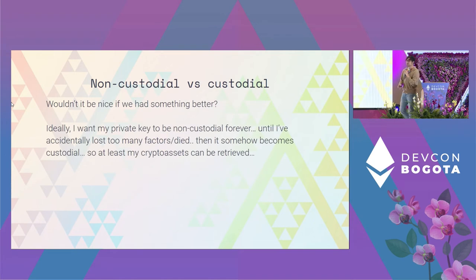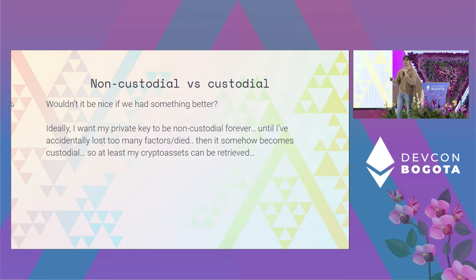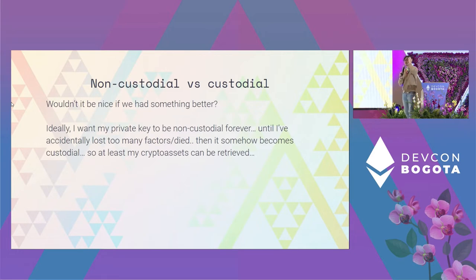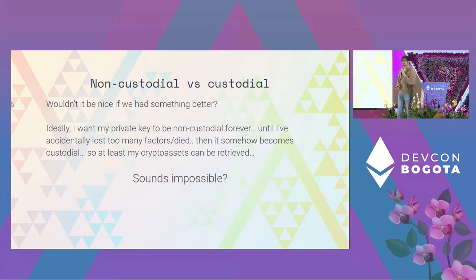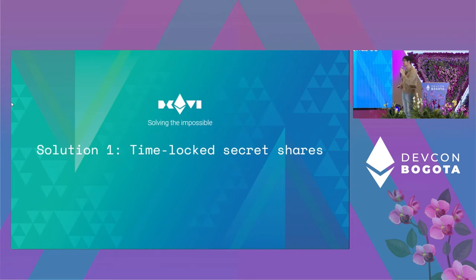Ideally, what I really want is for my private key to be non-custodial all the time, until I accidentally lose all my factors or — touch wood — I die, and then it somehow transitions to become custodial so that at least my crypto assets can be retrieved. Sounds impossible, right? Okay, let's try and solve it.